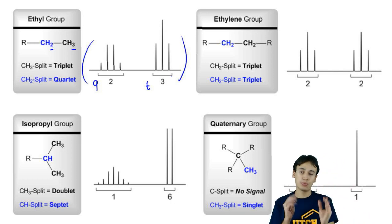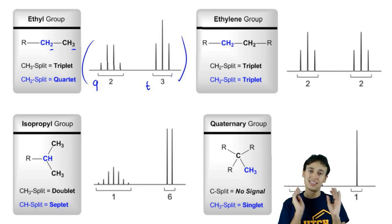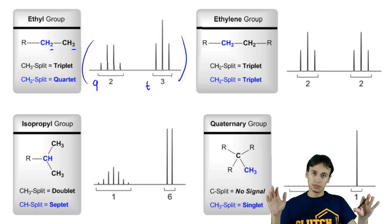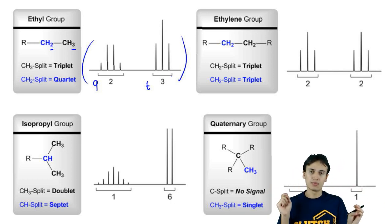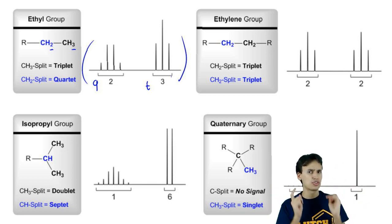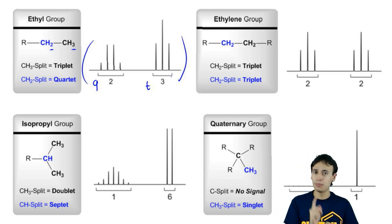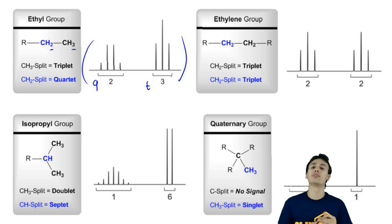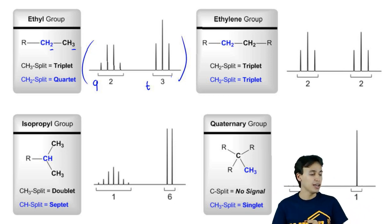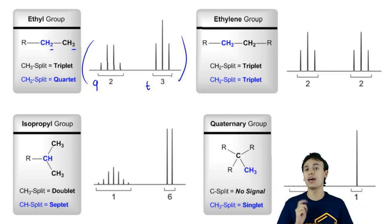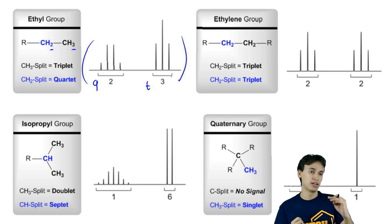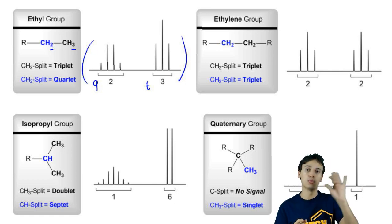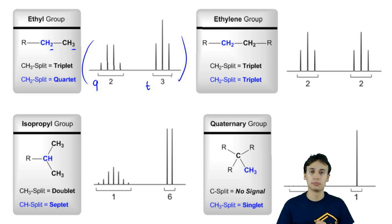If you see a triplet and a quartet in the same NMR spectrum, then you have to start thinking to yourself there might be an ethyl group there, because we know that ethyl groups produce a pair of a triplet with a quartet.